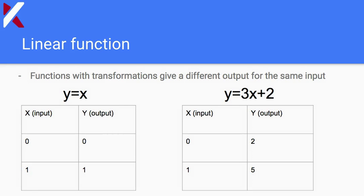Let's represent this on a table of values. Transformations give a different output for the same input. If you plug zero into the parent function y = x, you get zero. If you plug in one, you get one. But with a transformed function, you go through extra steps — for example, multiplying by 3 then adding 2. Plugging in zero: 3 times 0 is 0, plus 2 gives 2. Plugging in one: 3 times 1 is 3, plus 2 is 5.